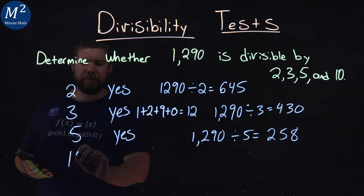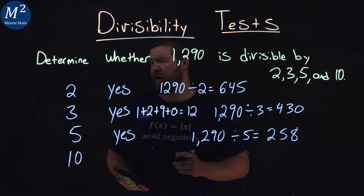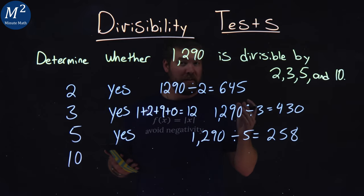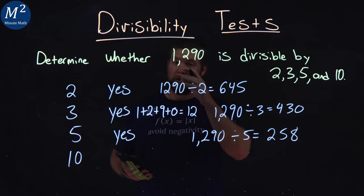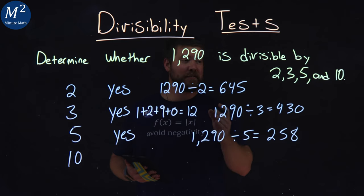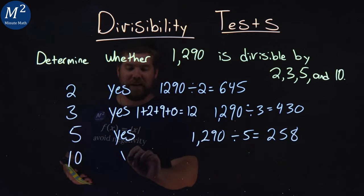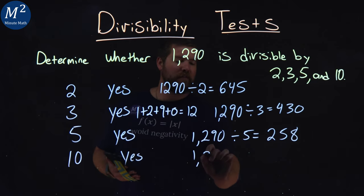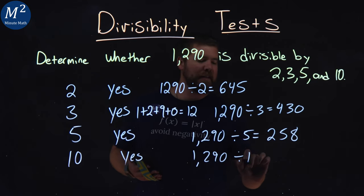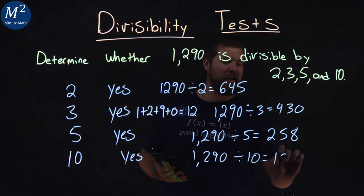Lastly, 10. Is 1,290 divisible by 10? Does it end in 0 and it's larger than 10? If it does, then yes, it is divisible by 10. So yes here. And 1,290 divided by 10 is just 129.